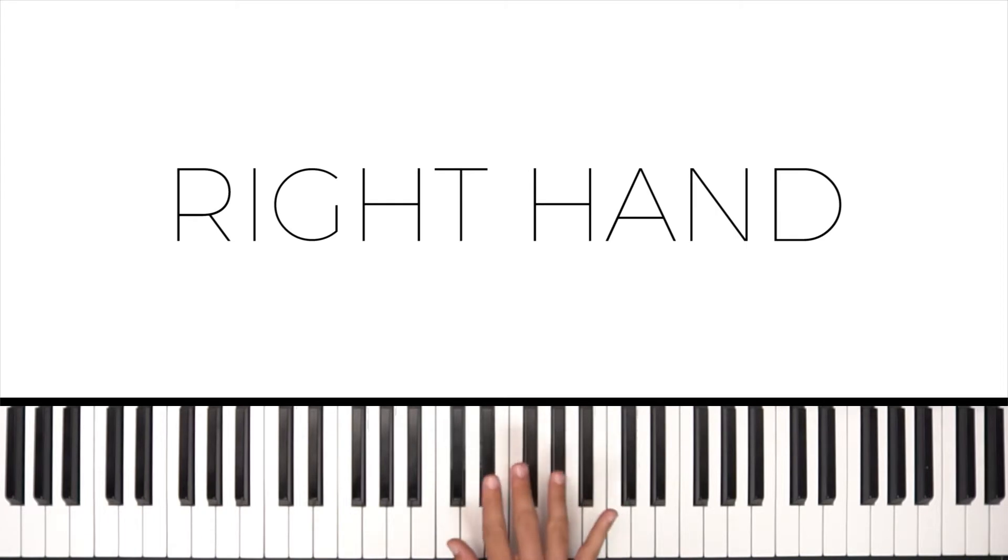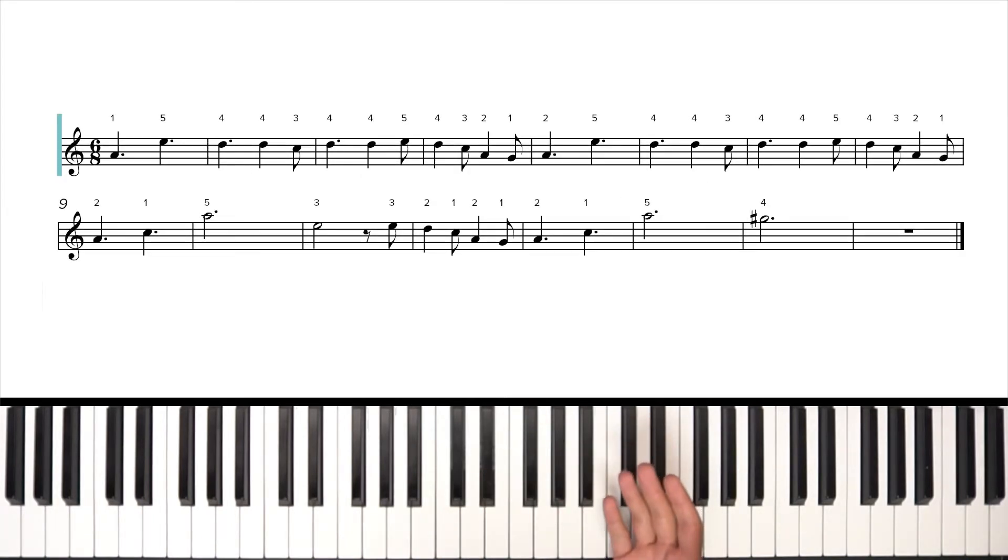All right, let's start with the right-hand melody. First off, key signature, no sharps, no flats. That means C major or A minor. Those are the related keys that share that key signature. Time signature here is a little different than what we normally see. Six eight. That means there are six eighth notes in each measure, and a time signature like this is usually felt symmetrically divided in half, so felt in a two feel instead of three.